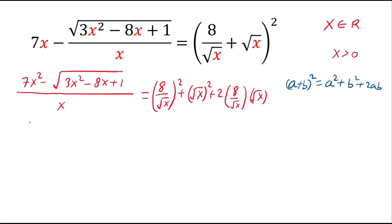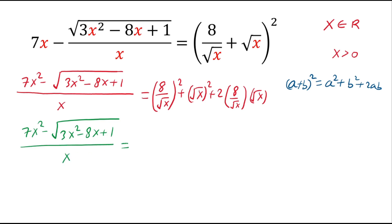On the left hand side: 7x squared minus square root of 3 times x squared minus 8x plus 1, divided by x. On the right hand side: 8 squared is 64, and square root of x squared is x, plus the square root terms cancel, giving 2 times 8 is 16.